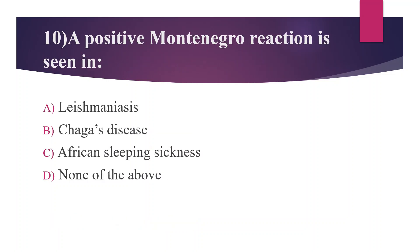Tenth question: A positive Montenegro reaction is seen in — option A. Leishmaniasis, option B. Chagas disease, option C. African sleeping sickness, option D. None of the above. The answer is option A, leishmaniasis. The Montenegro reaction, also called the leishmanin skin test, is an immunological skin test that measures delayed-type hypersensitivity to leishmania antigen, performed via intradermal injection. It determines the degree of exposure and immunity to the parasite.